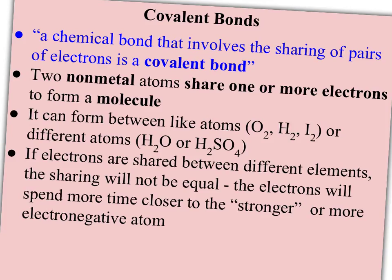With covalent bonds — like from cooperation, that prefix means togetherness, cohesive — a covalent bond means you're sharing those valence electrons. Two nonmetal atoms will tend to share one or more electrons to form a molecule, because nonmetals are looking to gain. So if both atoms need to gain electrons, then by sharing them, both atoms can get what they need.